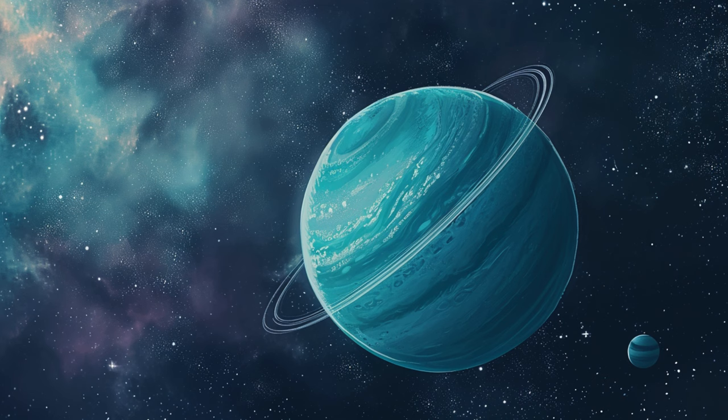Uranus has a blue-green color due to the presence of a gas called methane in its atmosphere. Uranus is also the coldest planet in our solar system. Let's say goodnight to Uranus. Goodnight Uranus.